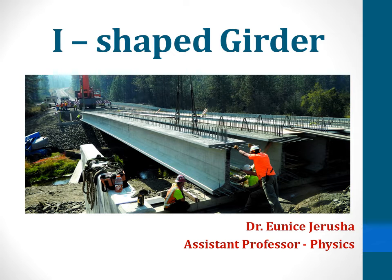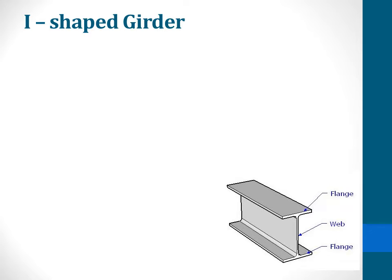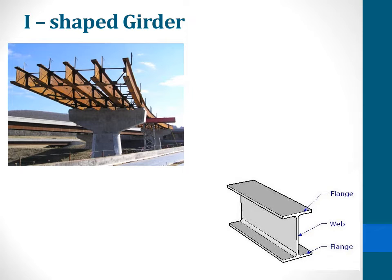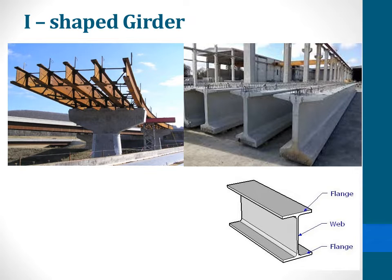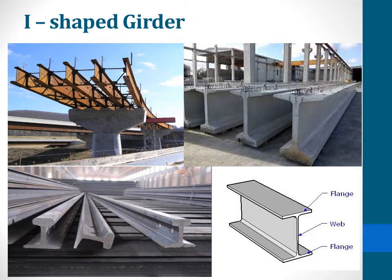Welcome to this knowledge gaining session on the I-shaped girder, presented by Dr. Eunice Jerusha, an assistant professor of physics. The I-shaped girder, whose cross section is in the shape of the letter I, is used for various construction purposes such as in flyovers, bridges, and also in railway tracks.